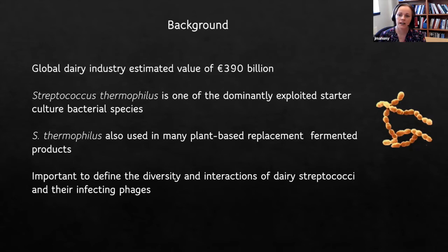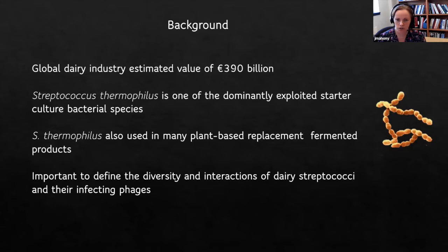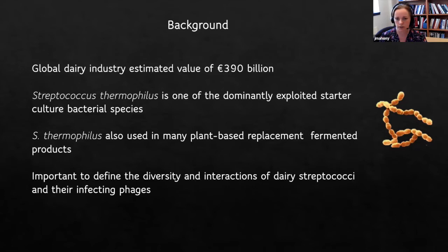As consumers change, we're moving slightly away from dairy and animal-based foods towards plant-based replacement fermented food products. But as we do so, we still need these bacterial cultures to ferment these products and produce the flavors and taste attributes we're familiar with. We still need bugs like Streptococcus thermophilus, and while you ferment these products using such high concentrations of cells, it's a perfect environment for phage to proliferate and increase in numbers very fast.